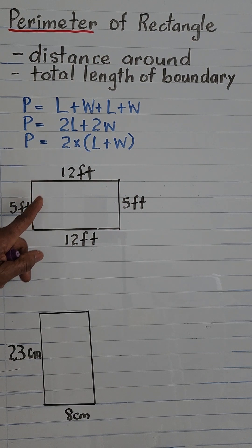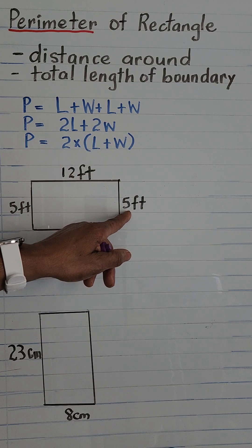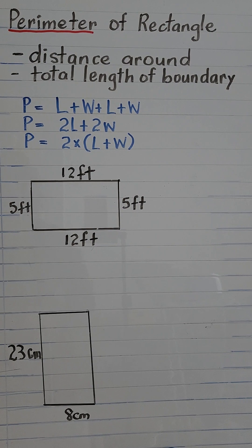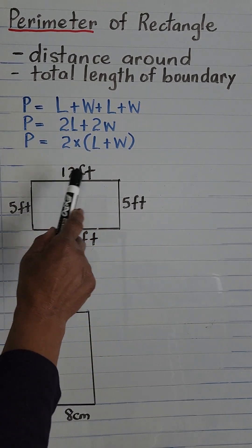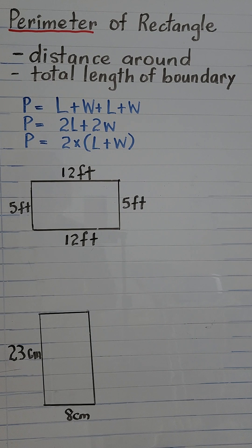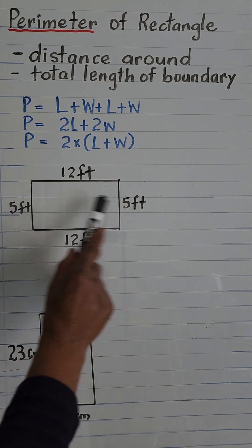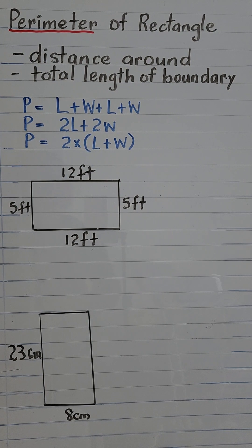First we look at this rectangle. We have 12 feet, 5 feet, 12 feet, and 5 feet, and we have the length and the width, the length and the width. As you notice, the opposite sides of the rectangle are equal, so these two sides are equal, these two sides are equal.